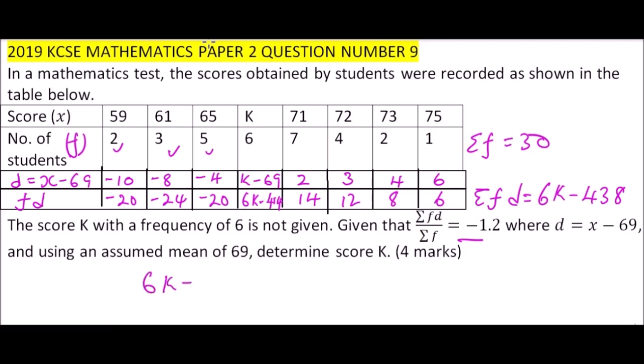minus 1.2. Multiply both sides by 30, you get 6K minus 438 equals minus 36. Take 438 to the other side, you get 6K equals 402, implying K equals 402 divided by 6, that should give you 67.